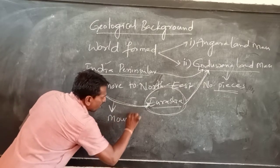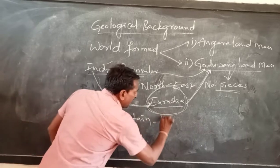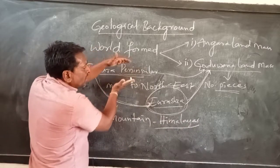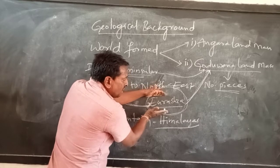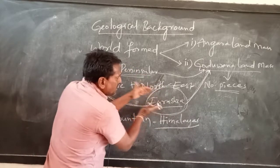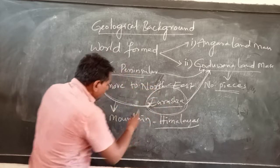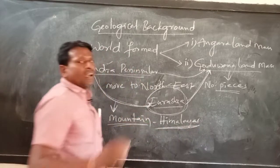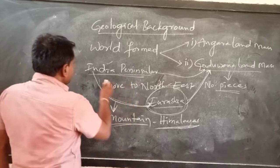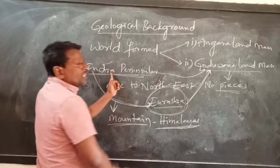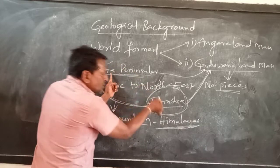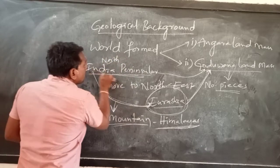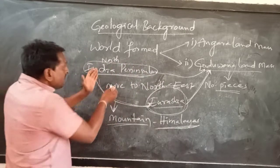During the collision process, over millions of years, fold mountains were formed. When the Indian peninsula touched, came close to, or crashed into Eurasia, what happened is that the north part of the Indian peninsula broke.